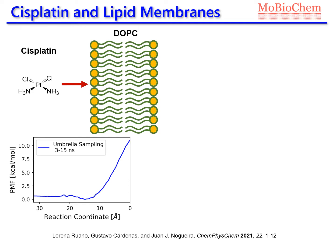In that prior work, we compared the free energy profile of the permeation mechanism of cisplatin by means of umbrella sampling simulations using a classical force field. We identified two important regions of the free energy profile: the minimum and the maximum. The minimum corresponds to configurations where cisplatin is near the polar heads of the DOPC molecules, while the maximum corresponds to configurations where cisplatin is at the center of the membrane.